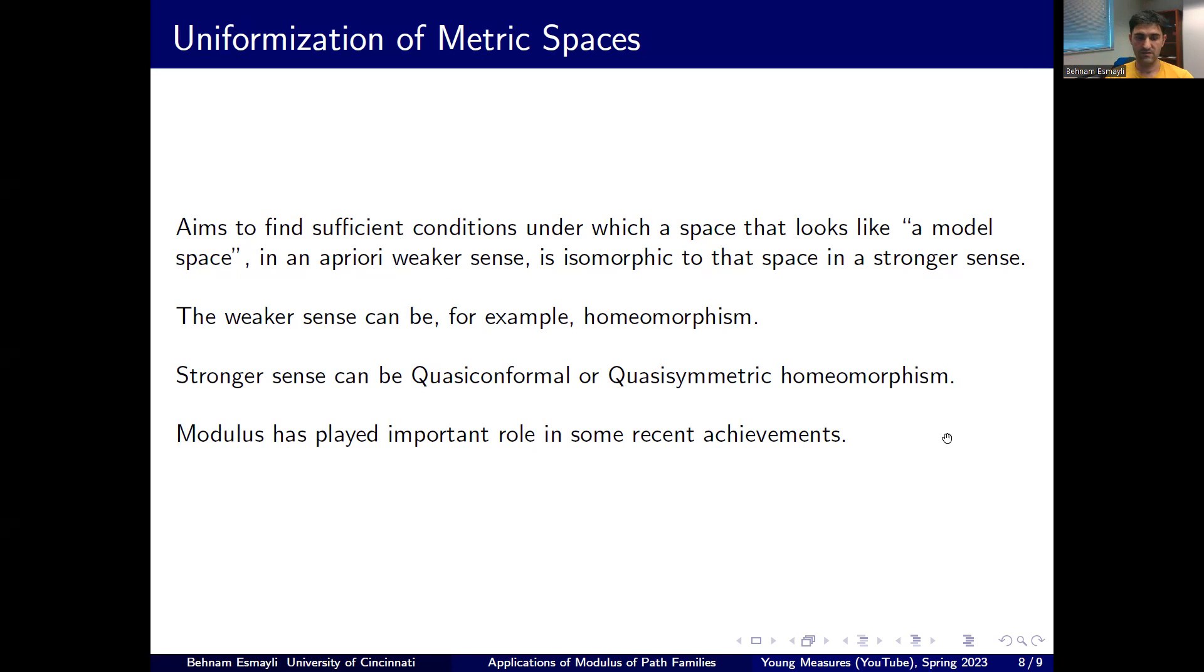It turned out, due to this amazing result of Rajala, that if you have a metric surface, if you have a metric space that is homeomorphic to R2, and then for every topological rectangle, which is just a homeomorphic image of the usual rectangle, for every topological rectangle, this property of reciprocality of modulus holds, then your space is quasi-conformally equivalent to the plane, and this quasi-conformality upgrades to quasi-symmetry under some more geometric assumptions on the space. There are maybe other technical assumptions on the space, but the core, the very pivotal idea was this reciprocality of modulus. So we see that just in terms of modulus, you can characterize when a metric space that is homeomorphic to R2 is indeed quasi-conformally equivalent to it.